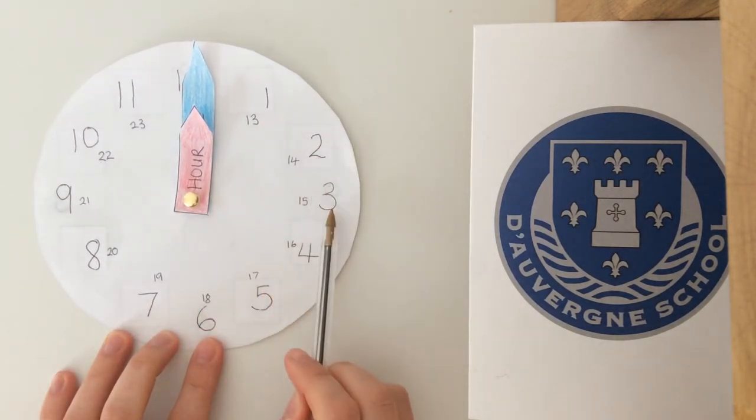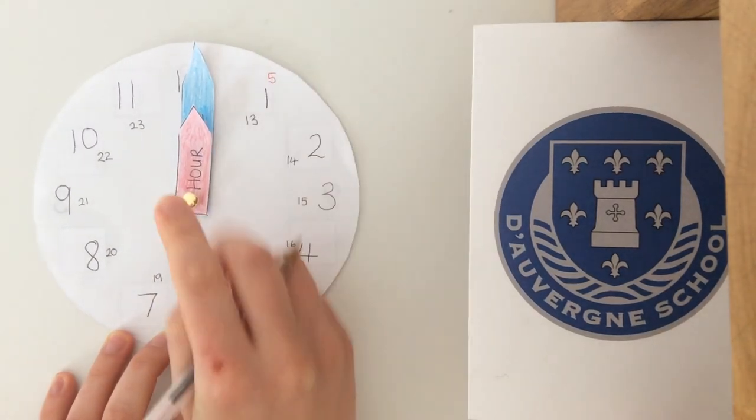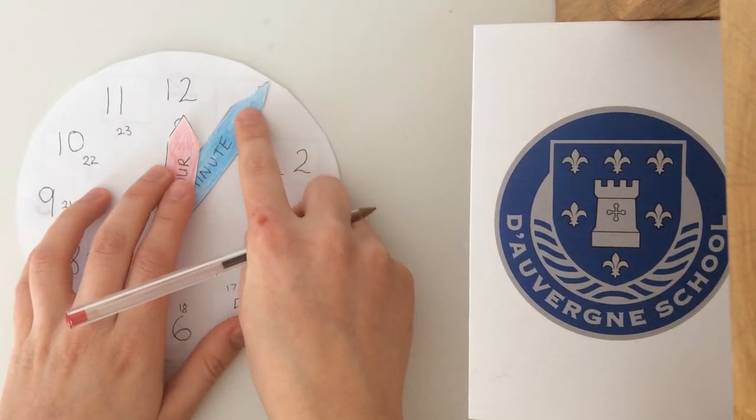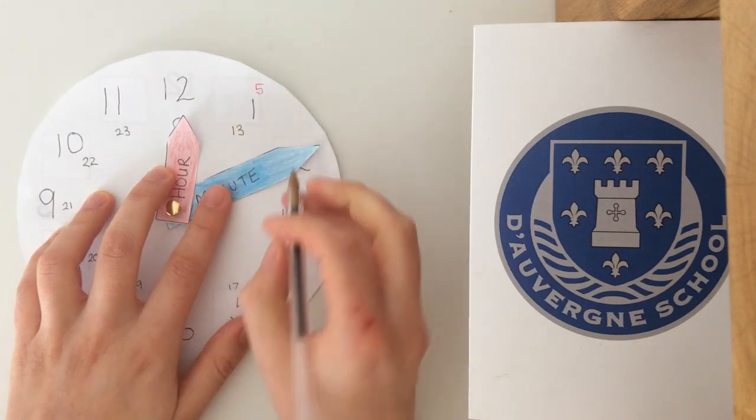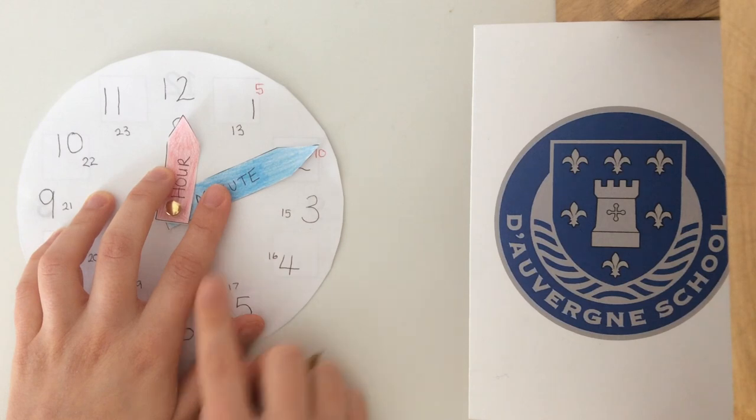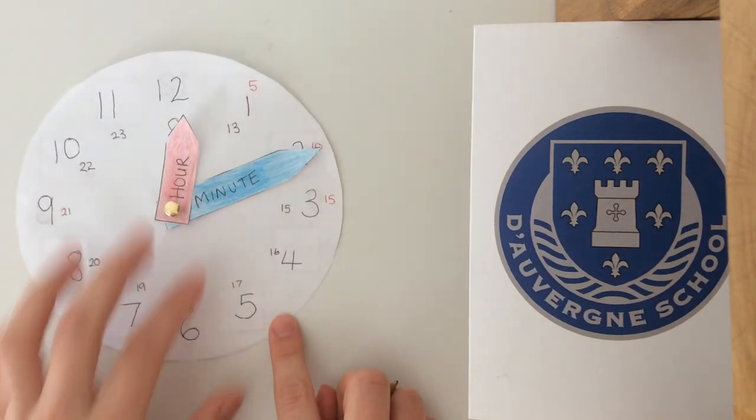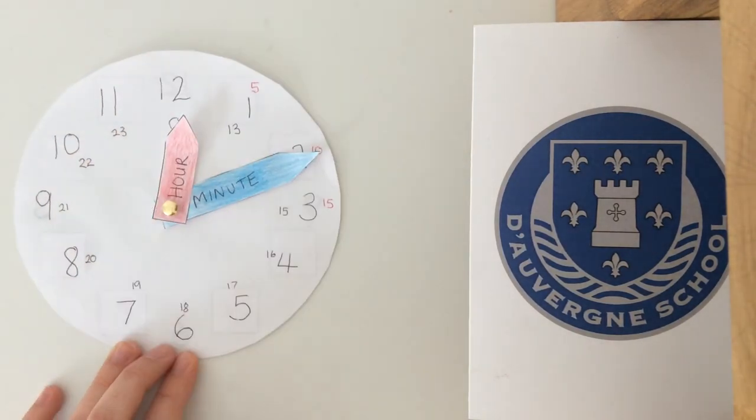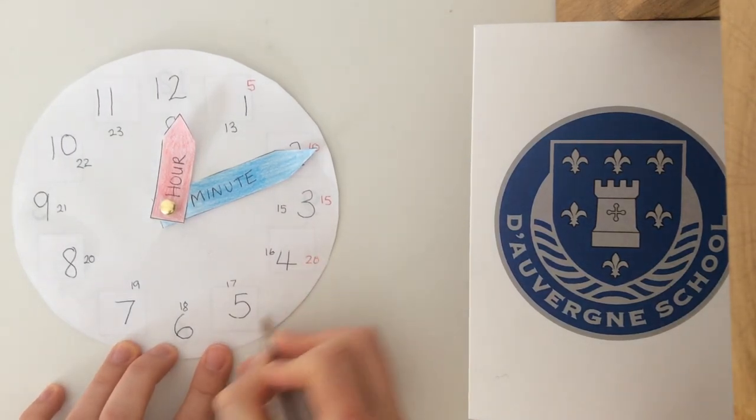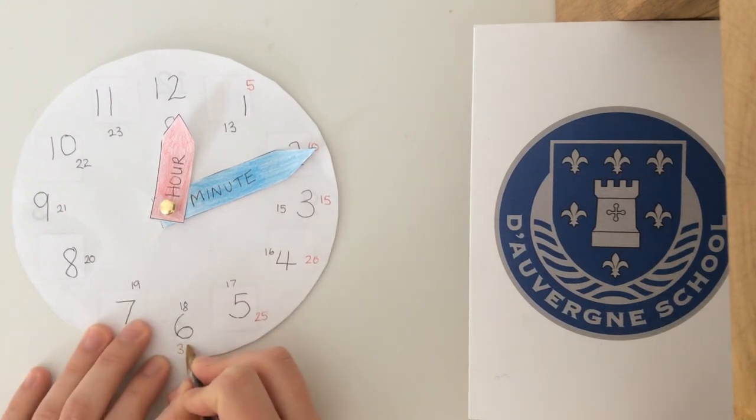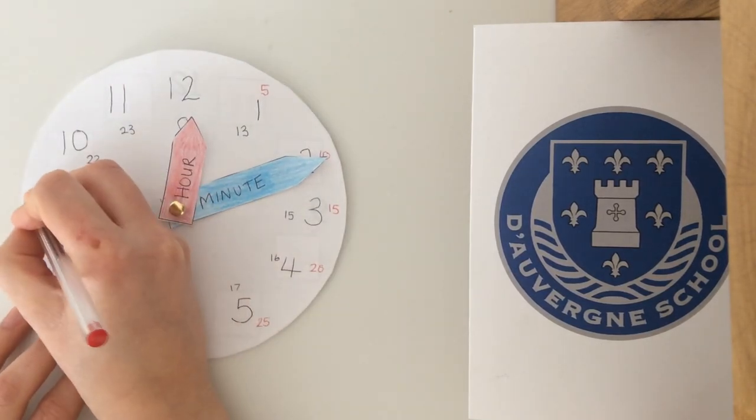So at each hour, we're going to label our 5 times table. If I put a 5 here, that means when my minute hand gets to here, I am 5 minutes past the hour. Then I'm going to be 10 minutes past the hour, 15 minutes past the hour, and you're going to do your 5 times tables all the way around to 12. Pause this video and off you go.